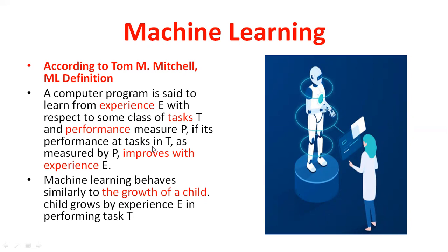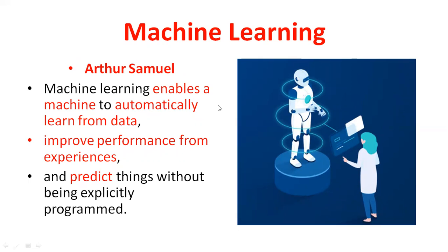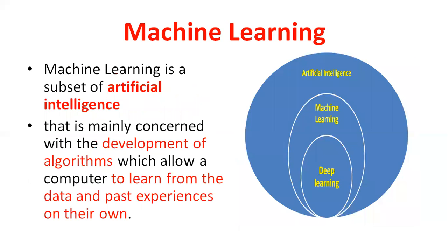Machine learning is similar to the growth of a child. A child learns something from experience, learns from analyzing the environment — similarly, a machine also learns in the same way. According to Samuel, machine learning enables a machine to automatically learn from data, improve performance from experience, and predict things without being explicitly programmed.